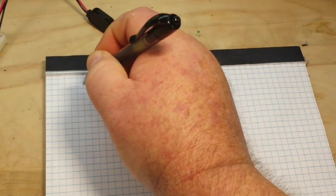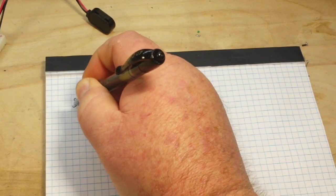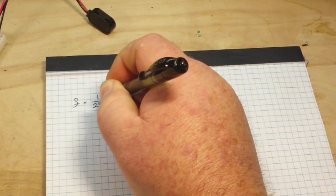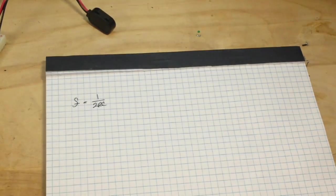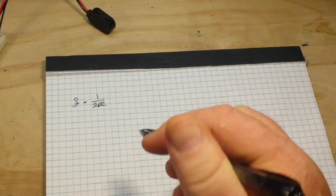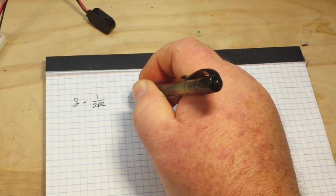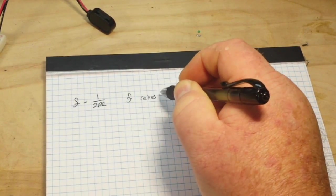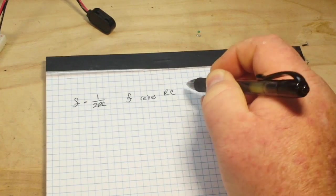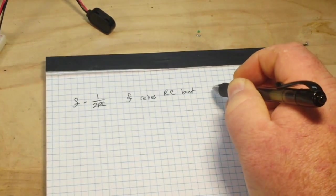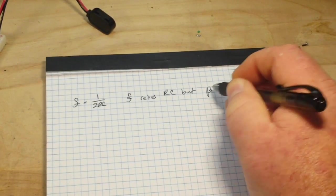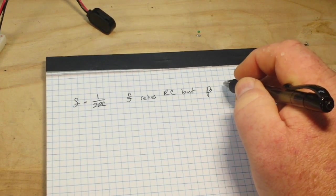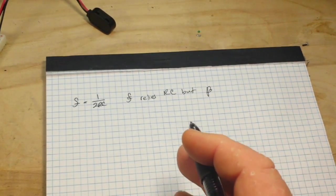How are we going to determine the frequency, which we talked about yesterday, which is 1 over 2RC? But the frequency relies not only on RC, but also on the feedback, which we'll call β. So how are we going to figure that out?